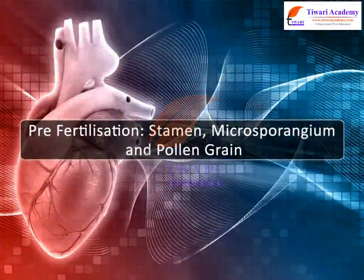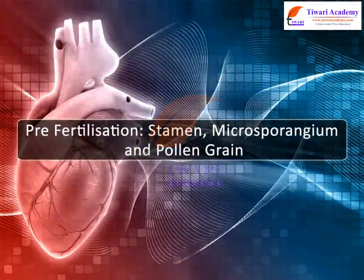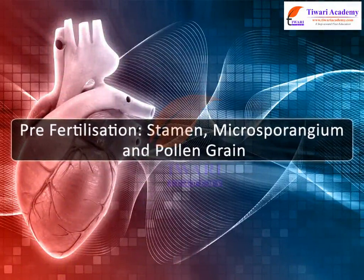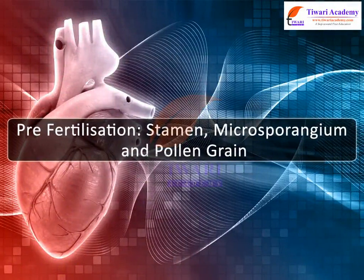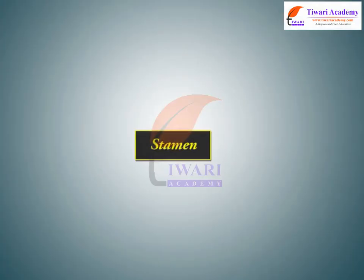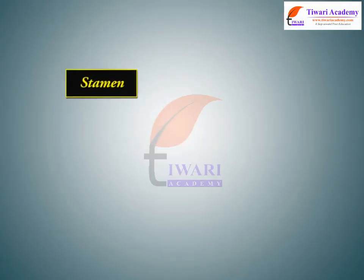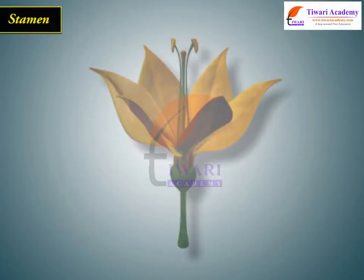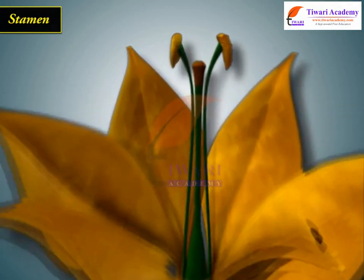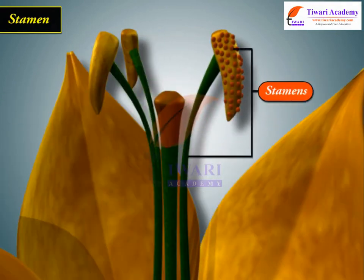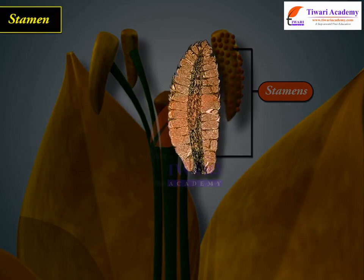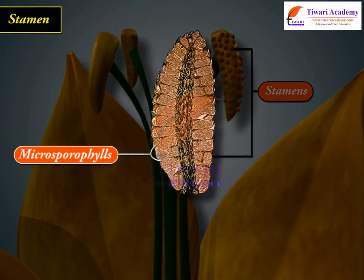Pre-fertilization: Stamen, Microsporangium and Pollen Grain. The stamens are modified leaves or microsporophylls concerned with the production of microspores or pollen grains.